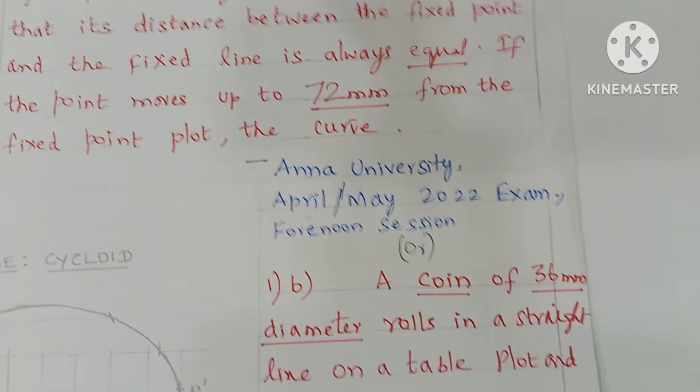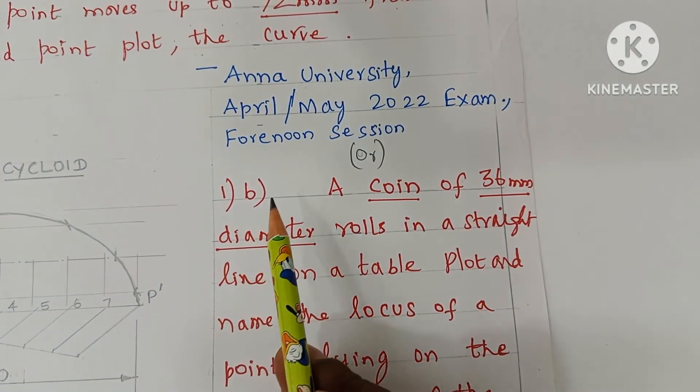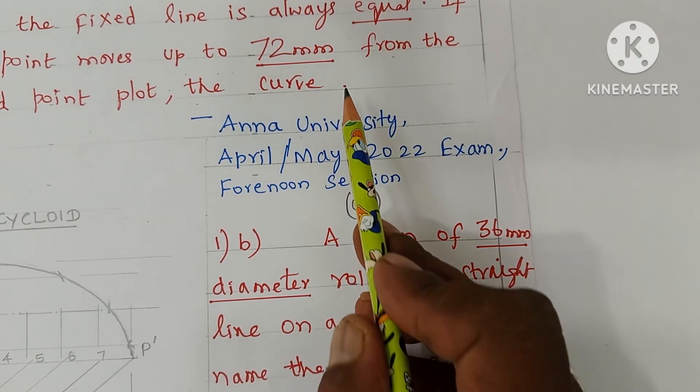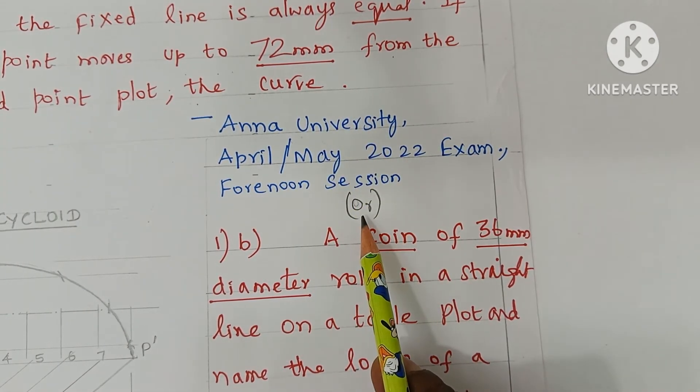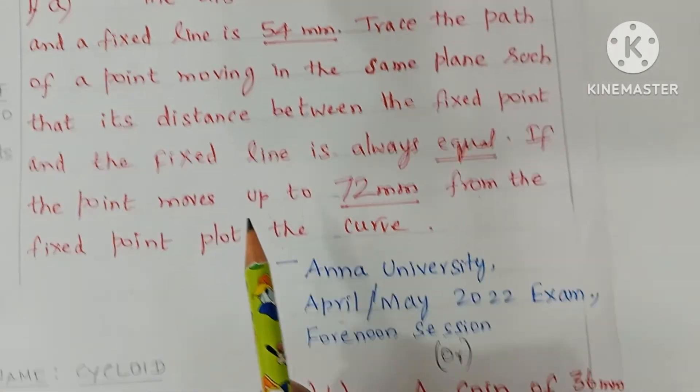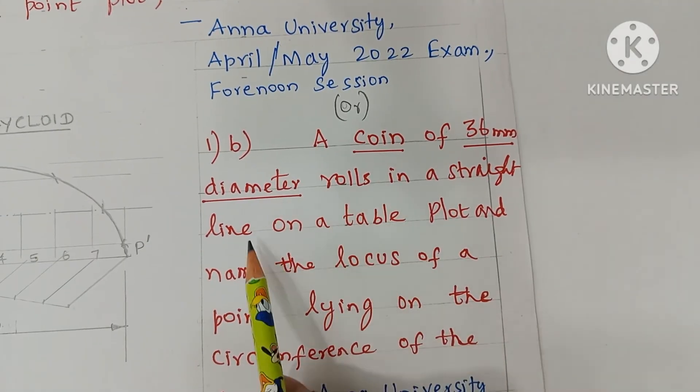Question number 1a or 1b, either or type question. Each question carries 20 marks. First question answer is parabola. Second question B section is cycloid.